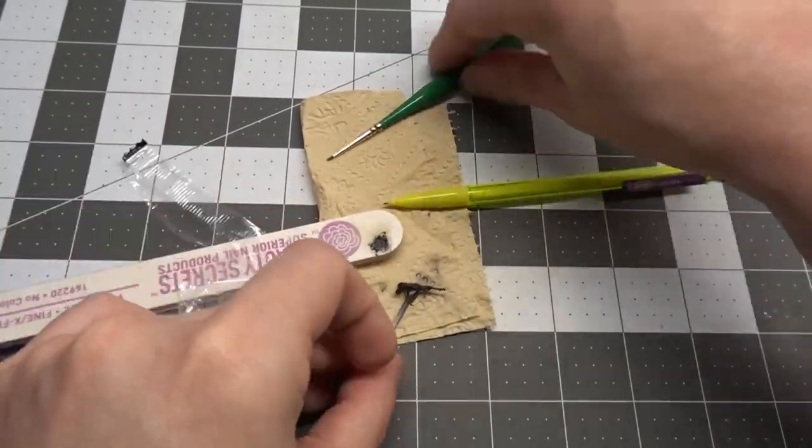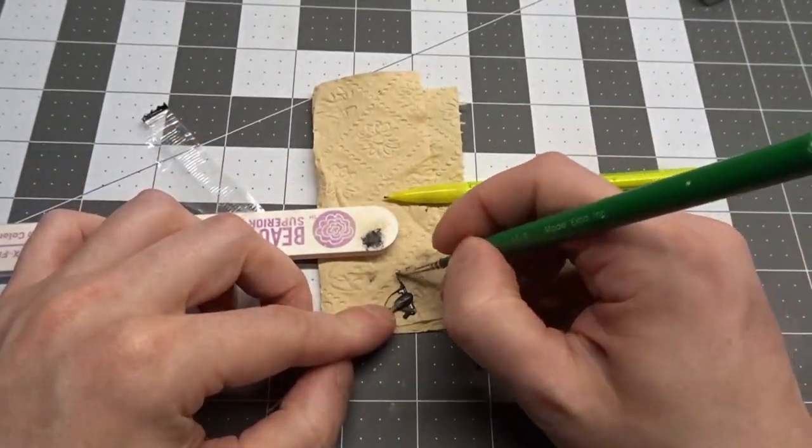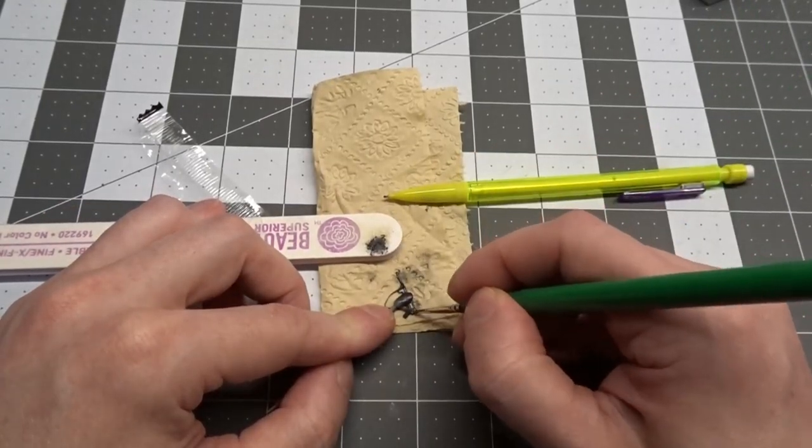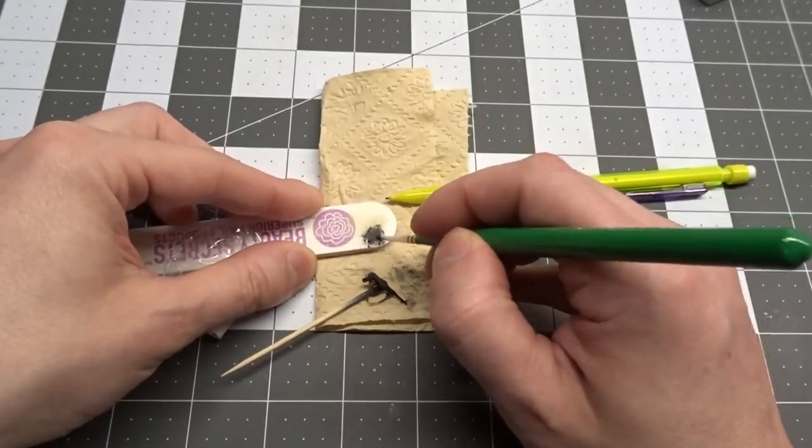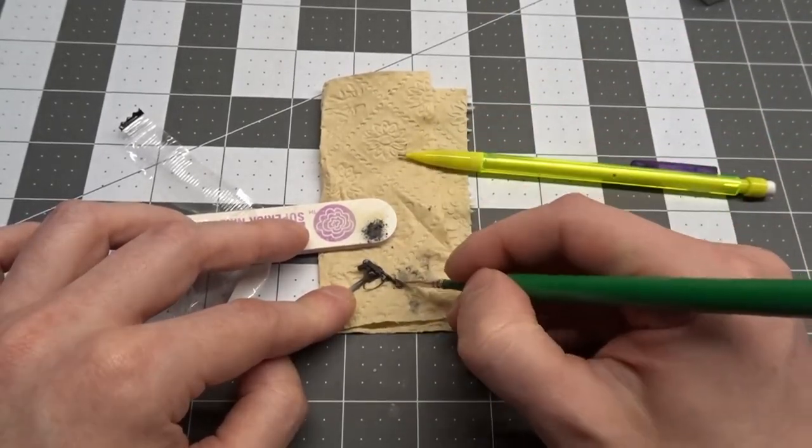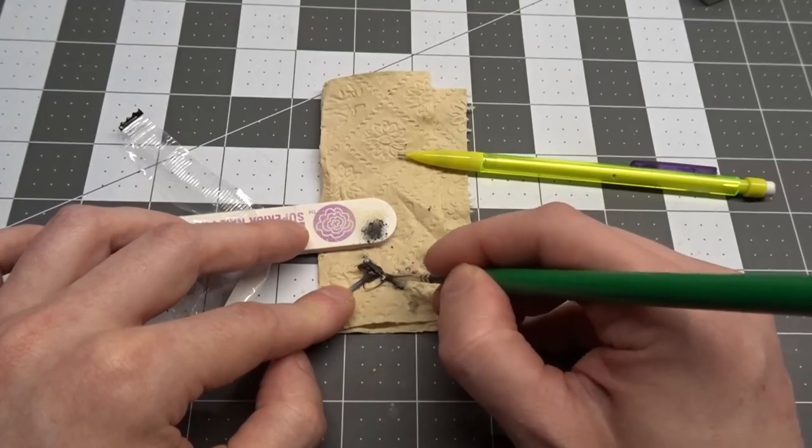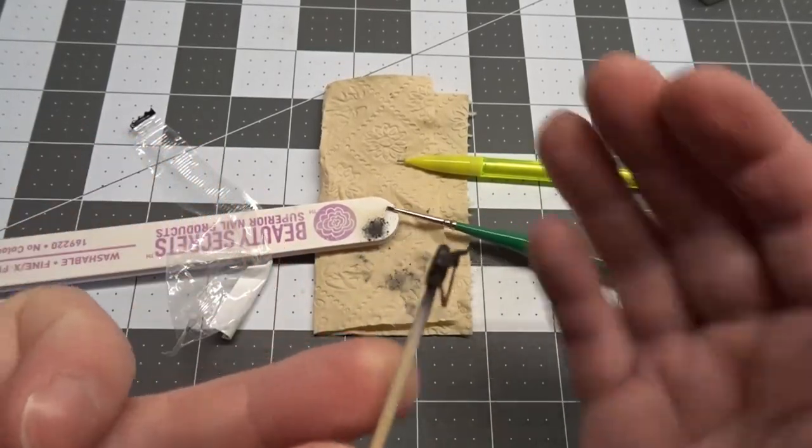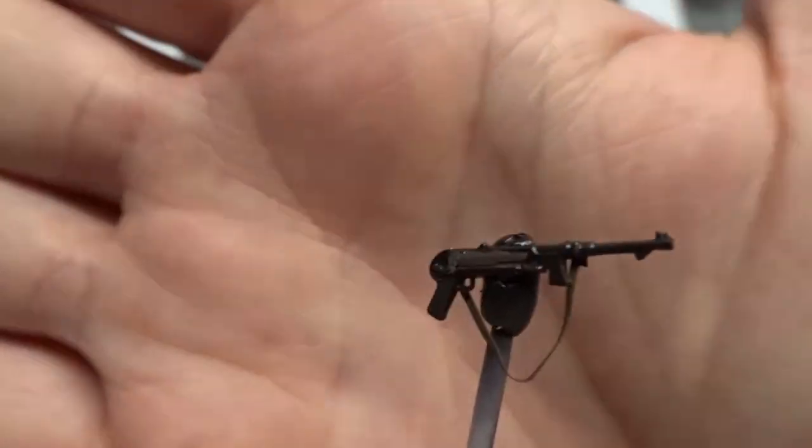And the last step is to take some graphite and rub it into the part with an old soft brush. Combined with the Alclad Gun Metal paint, it gives a realistic sheen.